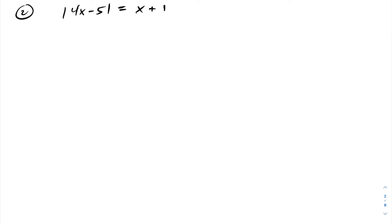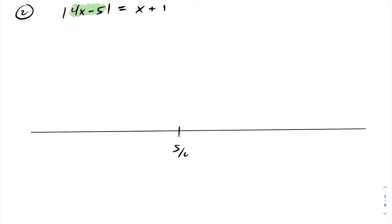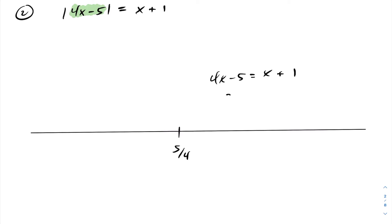For the next absolute value equation, we go through the same process. First, when is what's inside the absolute value going to be 0? That's going to happen when x equals 5 fourths. So let's label 5 over 4 on our number line. Any number we pick in the interval to the right will result in the input of our absolute value being positive. Therefore, by definition of absolute value, I can simply drop the absolute value symbol and solve the following equation. Solving this, we get 3x equals 6, or x equals 2. You should check that your answer is actually within the interval you're working with. You'll notice that 5 over 4 is less than 2, so 2 is within this interval.